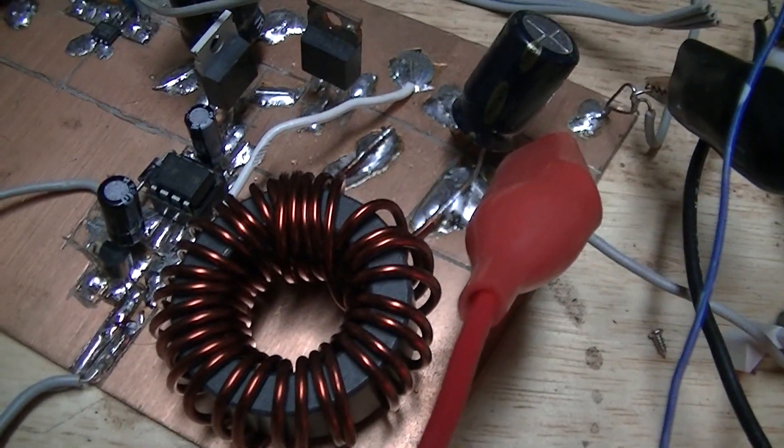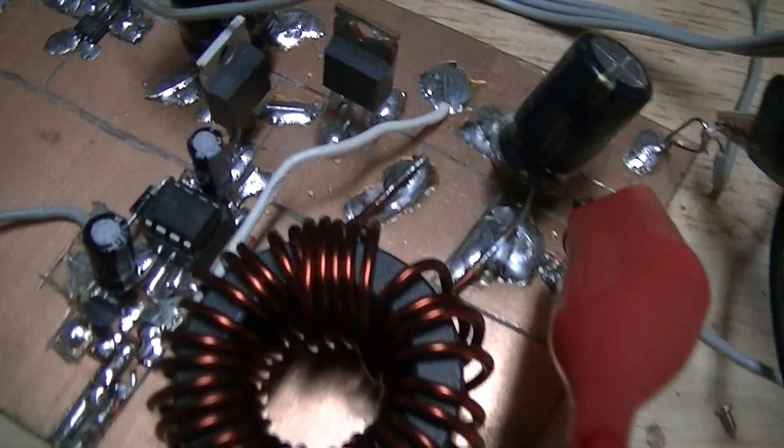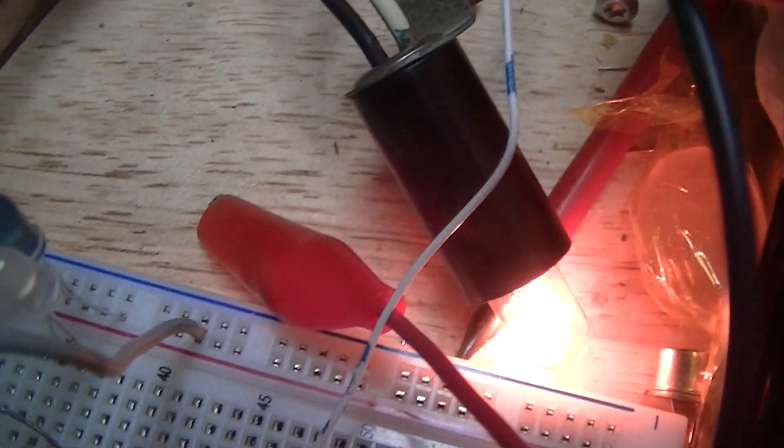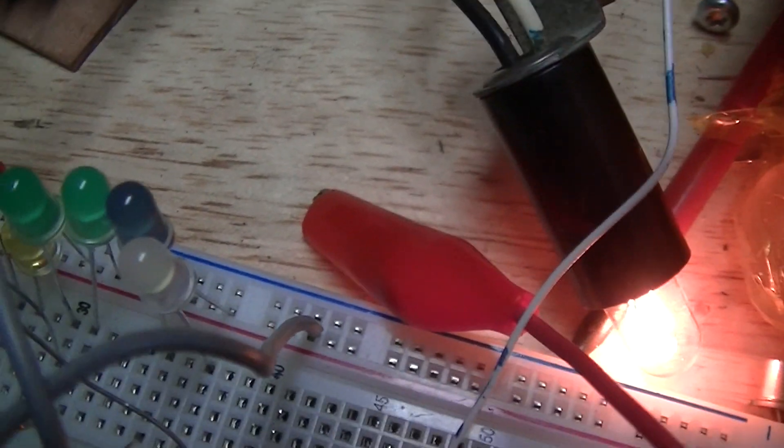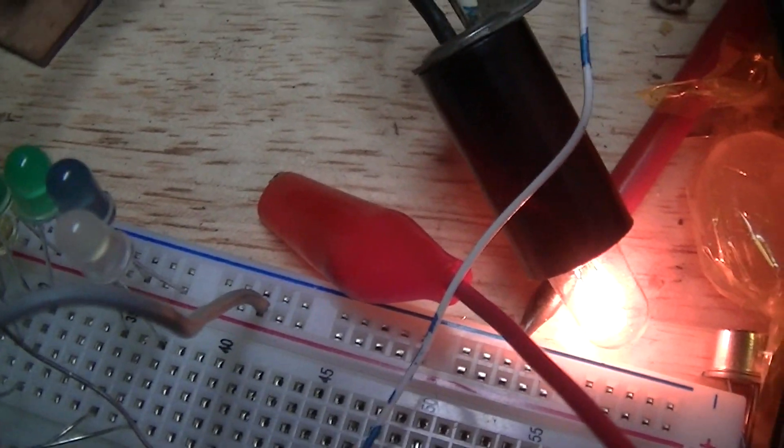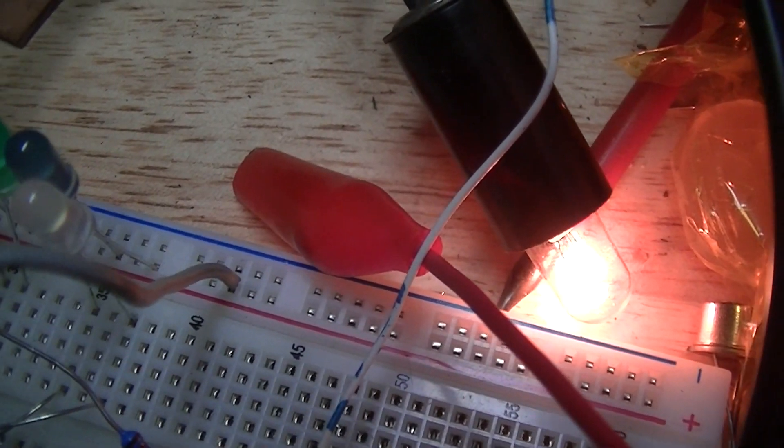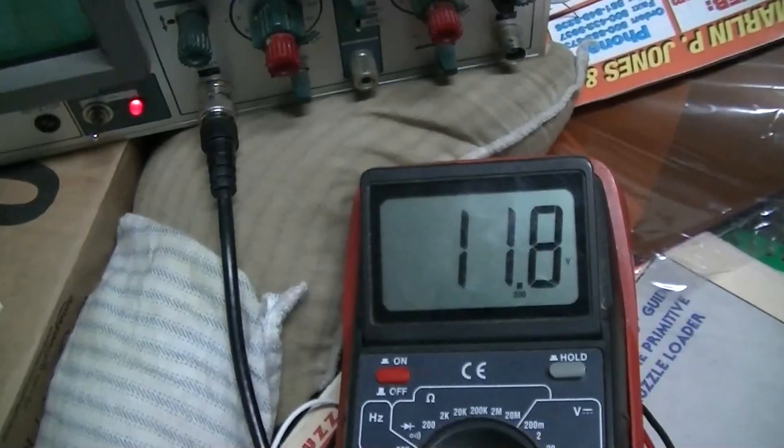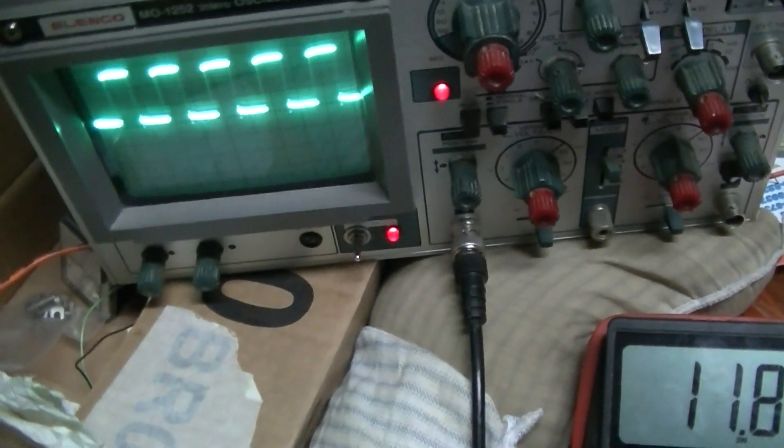The new inductor for the buck converter board works and the switching performance is much better. Now with a 50% duty cycle, the output is getting about 12 volts. It's putting out 11.8 volts with a 50% duty cycle, which is about what you'd expect.